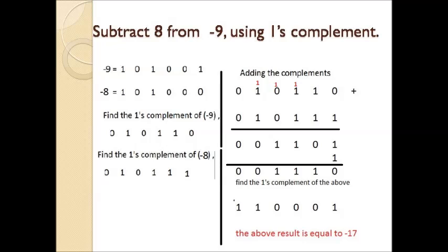After finding the ones complement, we add these complements. When we add them, a carry is generated, and that carry is added to the least significant bit. We then get an intermediate result, and we find the ones complement of that intermediate result. The ones complement of the intermediate result is equal to our desired result — that is what you are seeing on the screen.